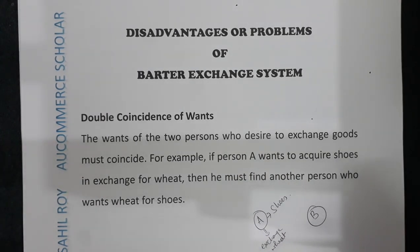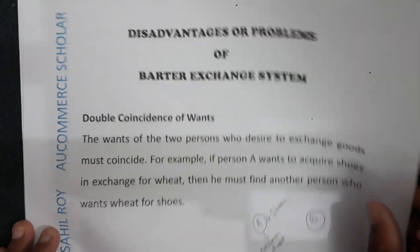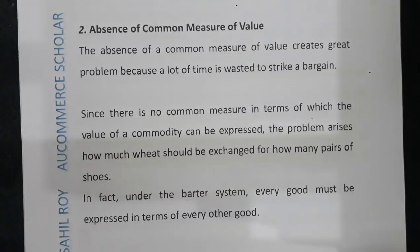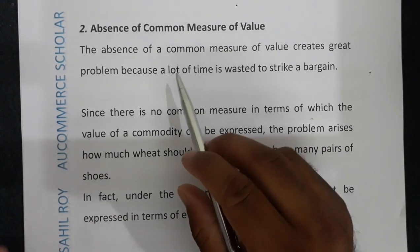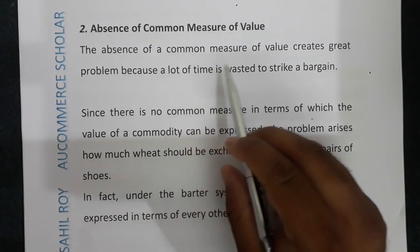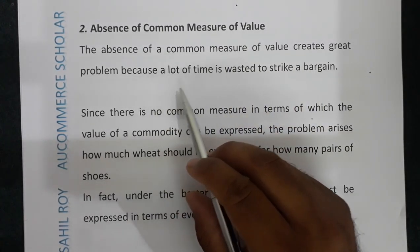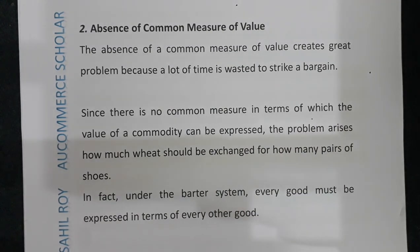The second problem is the absence of a common measure of value. The absence of a common measure of value creates great difficulty because a lot of time is wasted trying to strike a bargain. There was no common standard by which the value of goods could be measured or compared.